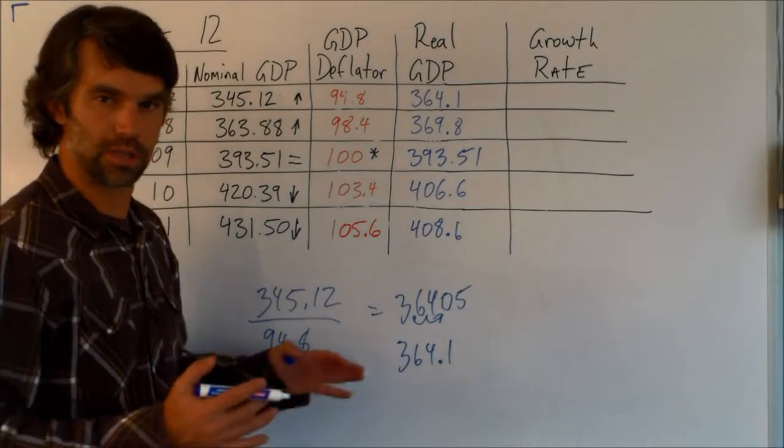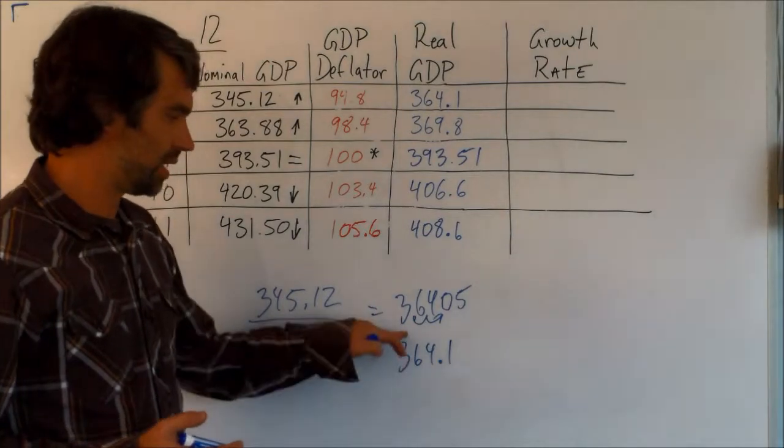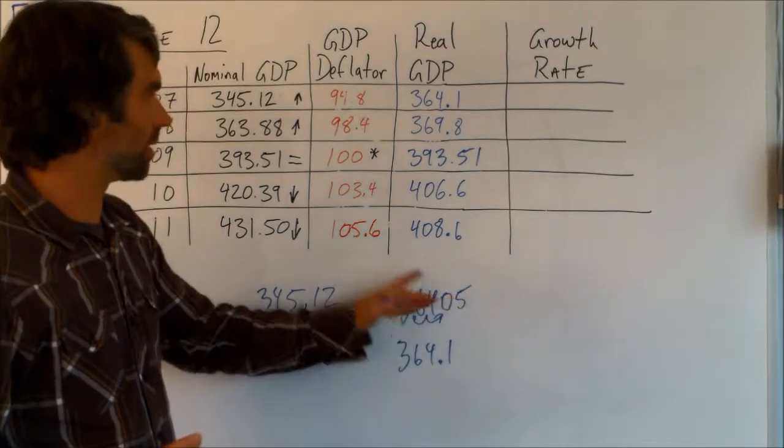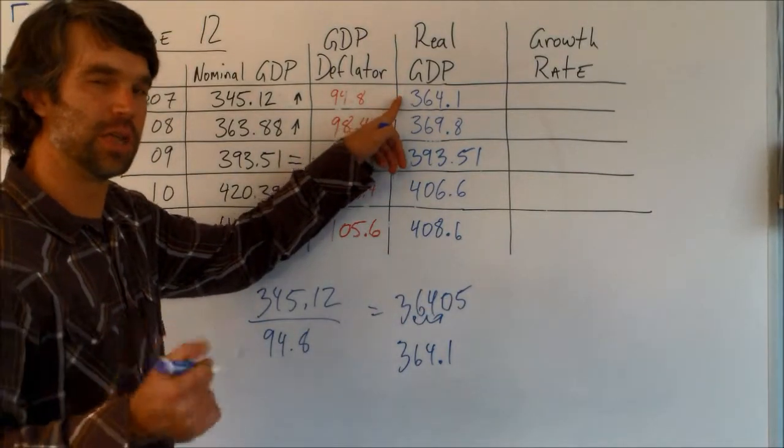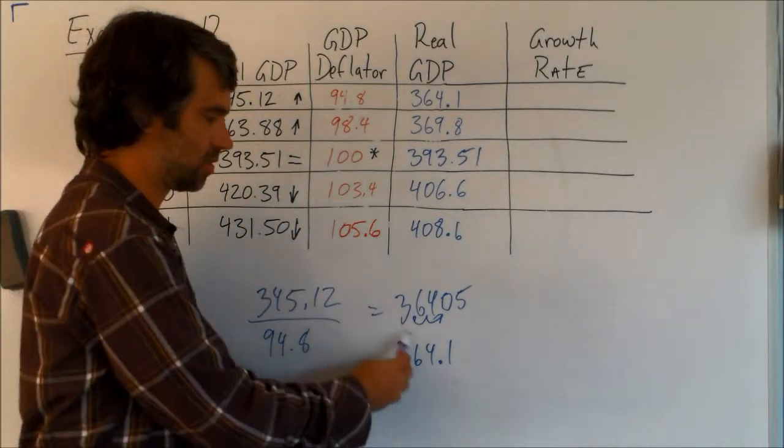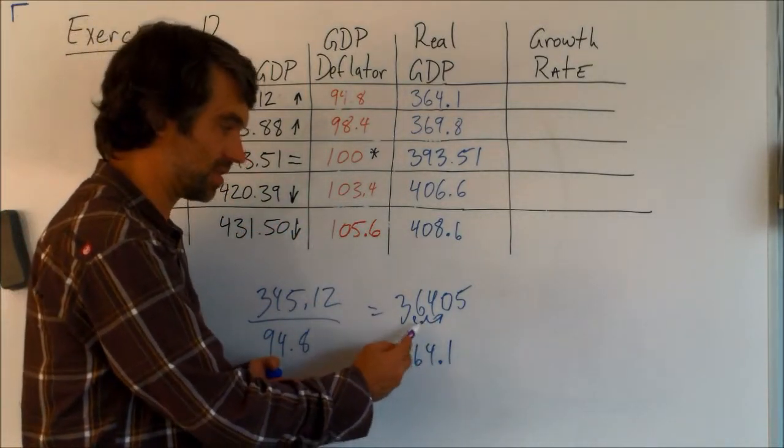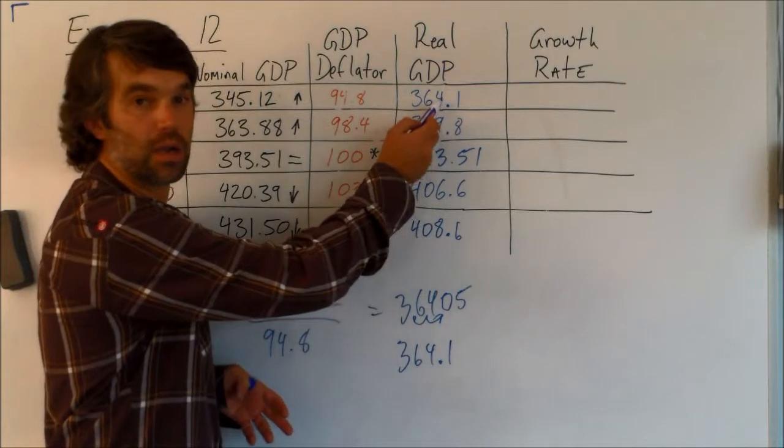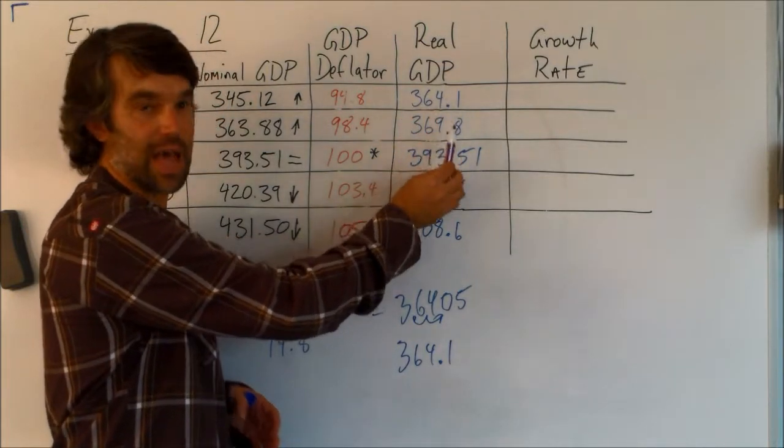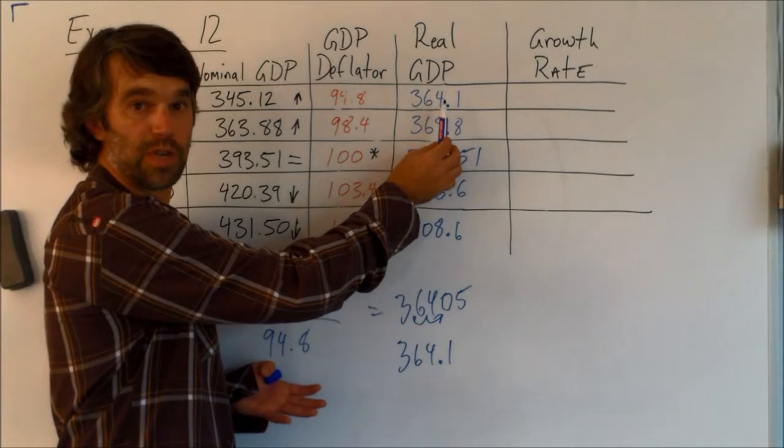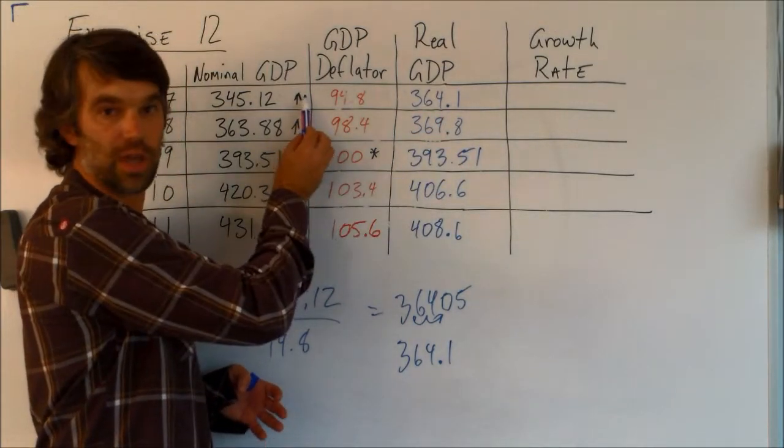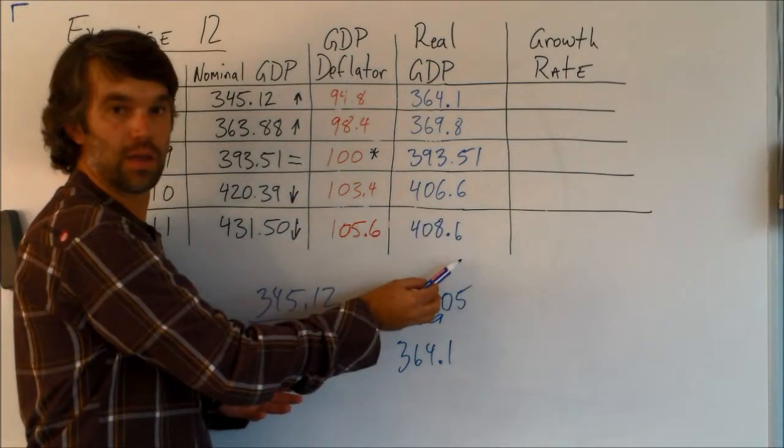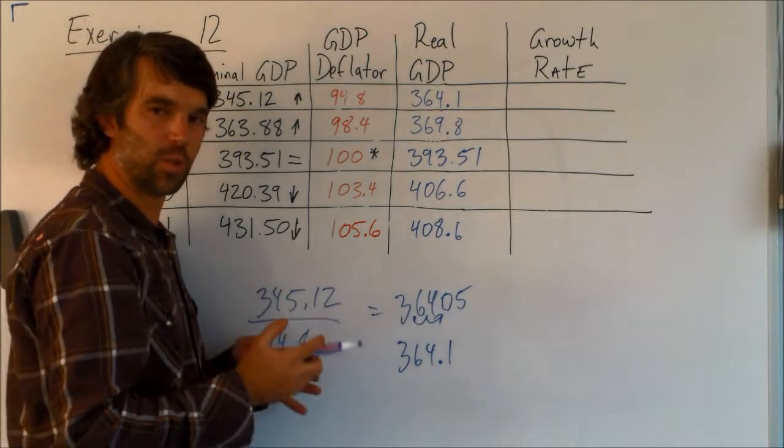Let me point out something real quickly that I did wrong, and I just need to make a quick adjustment. When we took this and got 364.05, and I said just 364 was enough, that's actually wrong because we are going to turn it into a real GDP. So we do need one decimal in that. So 364.05 multiplied by 100, we get 364.1. On the rest of these, we see exactly everything we predicted happened. So we can be reasonably certain that we did this right.